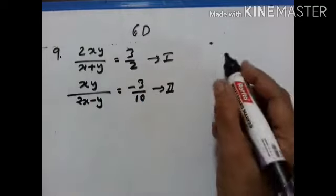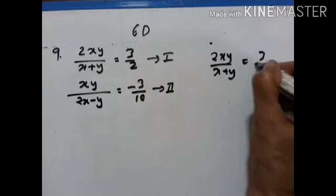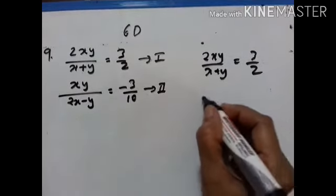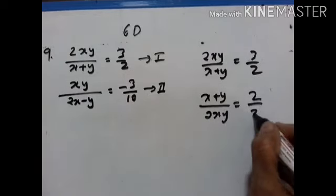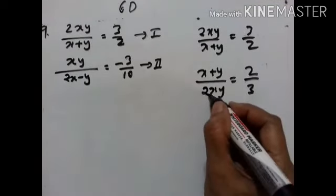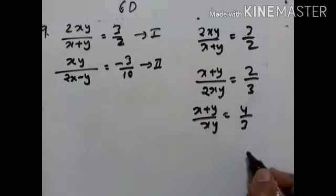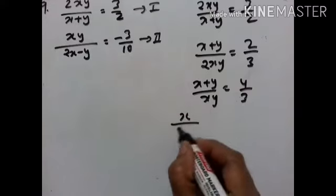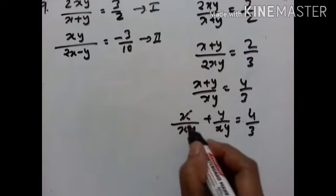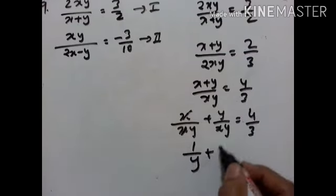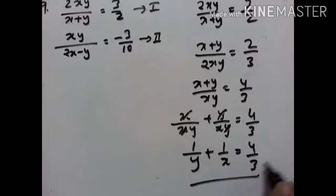Let us take the first equation: 2xy upon (x plus y) equals 3 upon 2. Taking the reciprocal: (x plus y) upon 2xy equals 2 upon 3. Transposing the 2 to the other side: (x plus y) upon xy equals 4 upon 3. Splitting the fraction: x upon xy plus y upon xy equals 4 upon 3. Cancelling: 1 upon y plus 1 upon x equals 4 upon 3. This is the first equation.